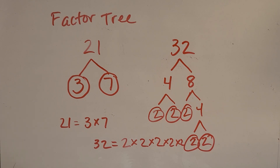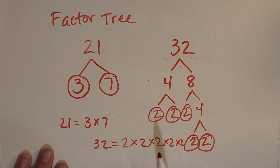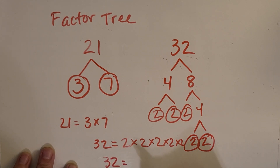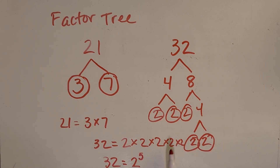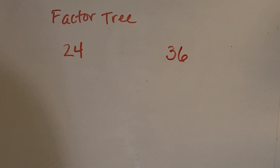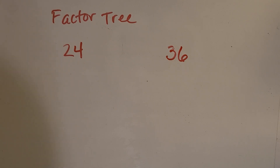We're going to learn a lot more about exponents in the next lesson, but I did want to mention that two times two times two times two times two has a simpler way of writing it. Instead, we can write it as two to the fifth power — that's the same as writing out all five twos multiplied together. It's kind of like an abbreviation, but we'll dig more into exponents in the next lesson. Now here are two more numbers to make a factor tree for. Pause the video, make your factor trees, and then we'll come back and check your work.